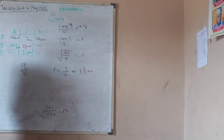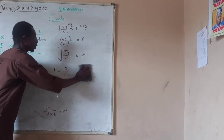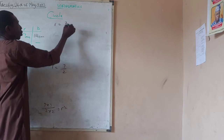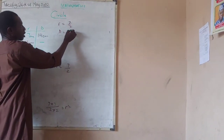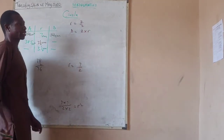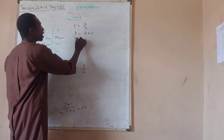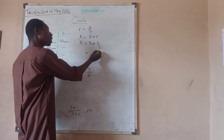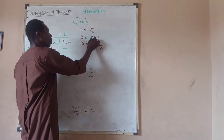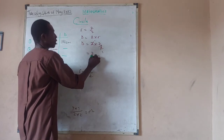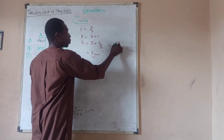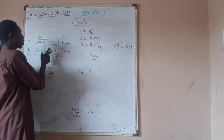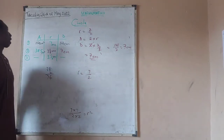Now to find the diameter: if r equals 7 over 2, then diameter equals 2 times r, so diameter equals 2 times 7 over 2. The 2s cancel, giving 7 centimeters. Or alternatively, 2 times 7 is 14 over 2, and 14 divided by 2 is still 7 centimeters. So you can see that the diameter is twice the radius.